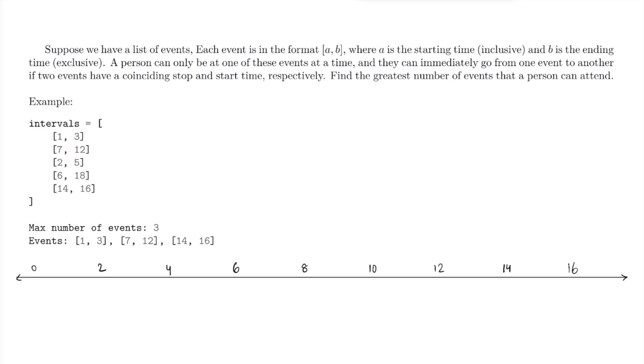Suppose we have a list of events, and each event is in the format (A, B), where A is the starting time, inclusive, and B is the ending time, exclusive. A person can only be at one of these events at a time, and they can immediately go from one event to another if two events have a coinciding stop and start time, respectively. So we want to find the greatest number of events that a person can attend.